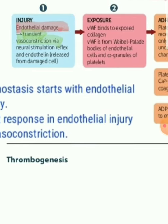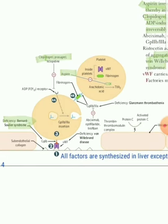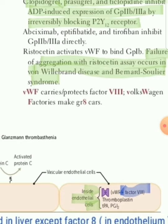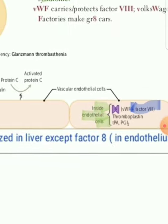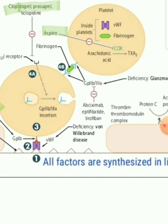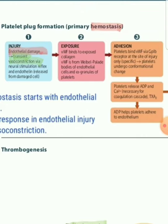When there is injury, the next step is exposure of subendothelial components. When endothelium is injured, it exposes von Willebrand factor and collagen. Inside the endothelial cell, von Willebrand factor is synthesized and stored. All coagulation factors are synthesized in the liver — hepatocytes — except Factor 8, which is in the endothelium, and Factor 4. Factor 4 is calcium, which is absorbed in the GIT, so it is not synthesized inside the body.